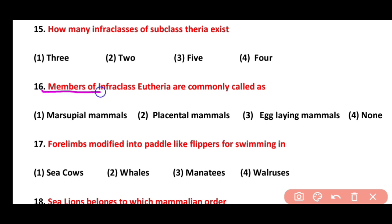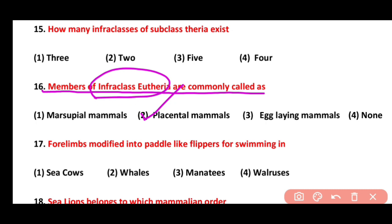Question 16. Members of infra class Eutheria are commonly called as: marsupial mammals, placental mammals, or egg-laying mammals. Correct answer is option 2. Members of infra class Eutheria are known as placental mammals, while members of infra class Metatheria are known as marsupial mammals.